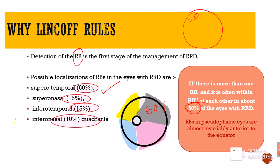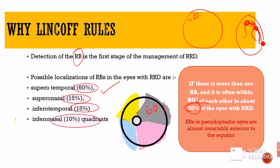Rhegmatogenous RD is a retinal detachment in which the primary cause is a retinal break. In the retina, there is a break for some reason, and then the liquefied vitreous gains entry into the subretinal space through that break. The subretinal space then fills up with subretinal fluid, and the neurosensory retina gets detached from the retinal pigment epithelium. Such a retinal detachment associated with a retinal break is called a rhegmatogenous retinal detachment.